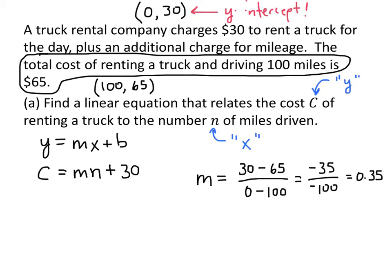Negative 35 over negative 100 works out to be 0.35. The units: on top, 30 and 65 are values of C, so those are dollars. On the bottom, 0 and 100 are miles. So the units are dollars per mile. We'll use those units when we interpret the slope. For now, we have our cost equation: C equals 0.35 times N plus 30.